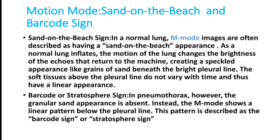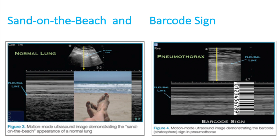In pneumothorax the granular sand appearance is absent. The M-mode shows a linear pattern below the pleural line — the barcode sign — which is diagnostic of pneumothorax, whereas the sand on the beach sign is seen in a normal lung. Using ultrasound in the ER is easier and faster than taking an X-ray.